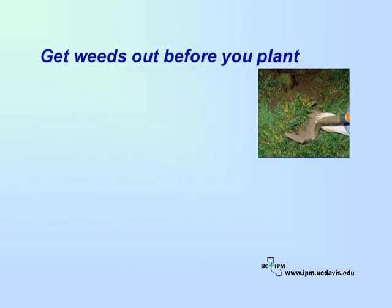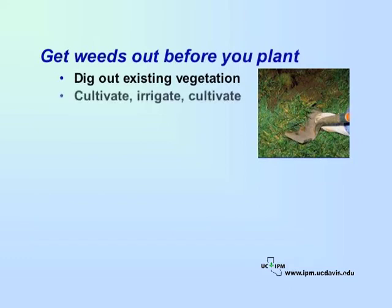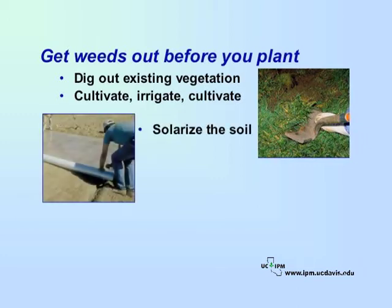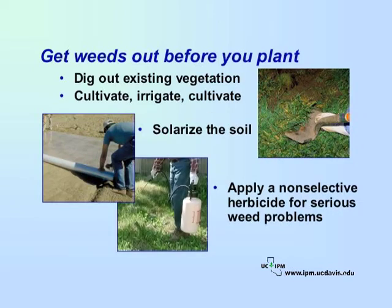In areas not yet planted, manage weeds before you plant. Dig out existing vegetation, including buried vegetative parts of weeds. Cultivate the soil. Irrigate to let weeds germinate, and then cultivate the area again to remove newly germinated seedlings. Soil solarization can control most weed seeds after vegetation is removed; it requires a clear plastic tarp on the soil surface for about four to six weeks during the hottest part of summer. If you have serious weed problems with perennials or for very large areas, an application of a non-selective herbicide may be warranted. Switching from sprinkler irrigation to drip or other low-output irrigation systems in landscape beds can reduce water use and extensive weed growth.